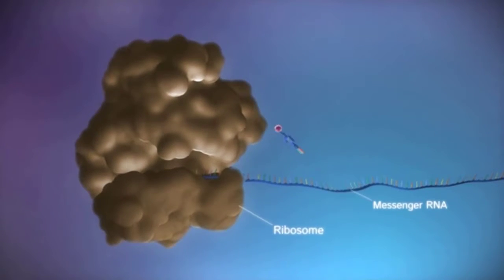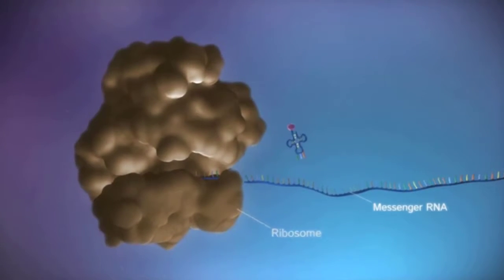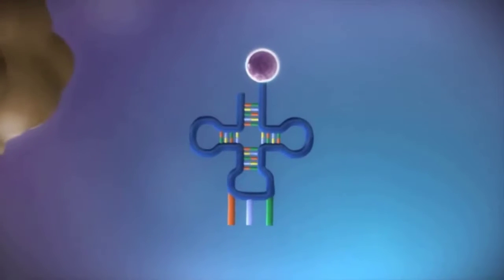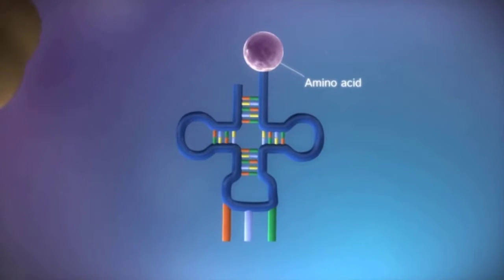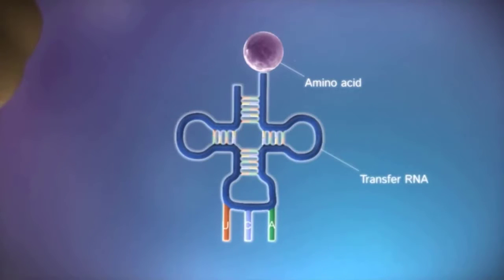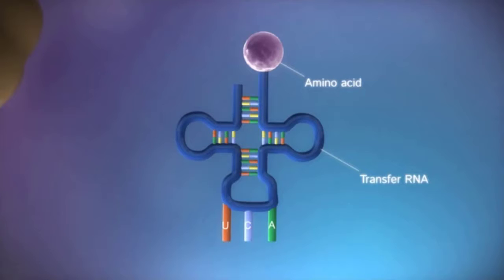The ribosome reads the code in the messenger RNA to produce a chain made up of amino acids. There are 20 different types of amino acid. Transfer RNA molecules carry the amino acids to the ribosome.